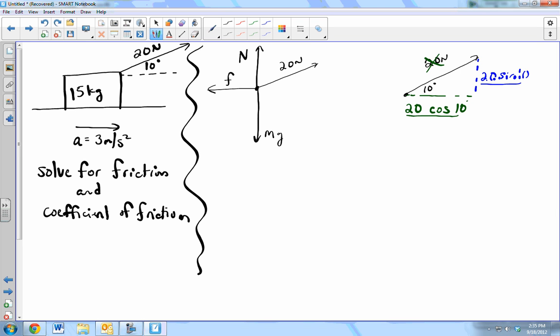sum of forces equals ma. Sigma f equals ma. Which direction do you want to solve it? Start in the x because that's the direction of friction. So the sum of the force in the x equals ma. What forces do we have in the x direction?